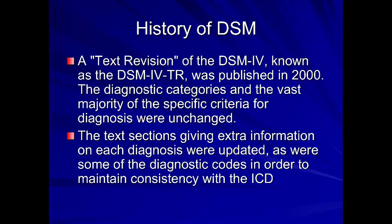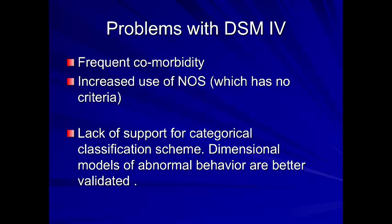A text revision, the DSM-IV-TR, was published in 2000. It was largely the same, with just a few text changes — hence 'text revision' — and some diagnostic codes were updated for consistency with the ICD. Some problems highlighted with the DSM-4 included frequent comorbidity, with a large degree of overlap between many disorders such as anxiety and depression.